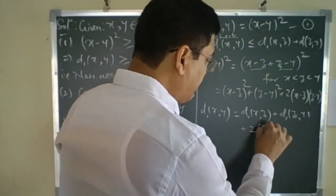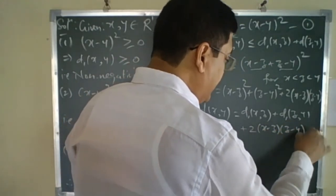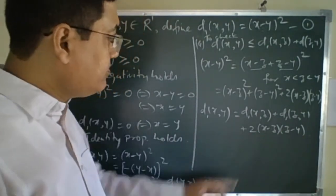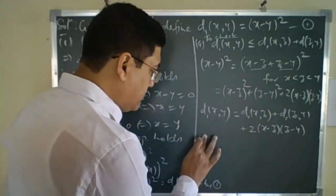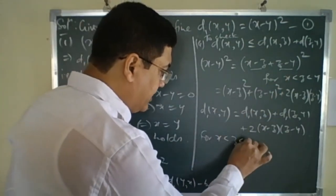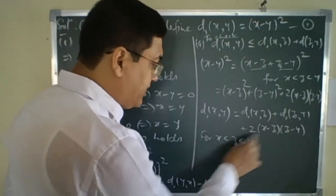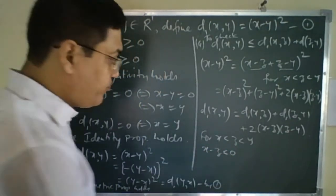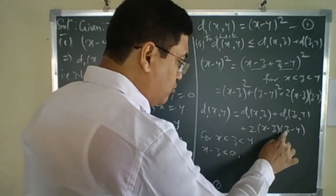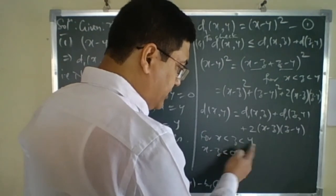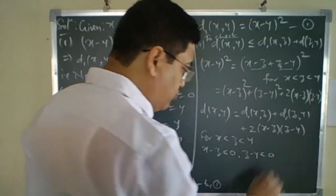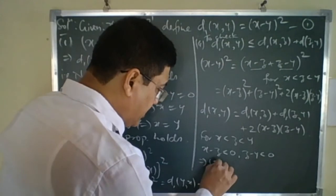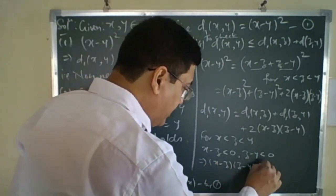So d1(x,y) = d1(x,z) + d1(z,y) + 2(x−z)(z−y). Now we examine the extra term 2(x−z)(z−y). If x < z < y, then x − z < 0 and z − y < 0, so (x−z)(z−y) is the product of two negatives, which is positive. This implies (x−z)(z−y) > 0, so the extra term is positive.